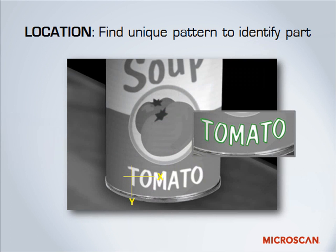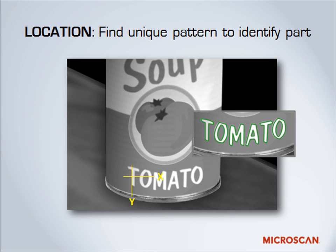Additionally, you can find a unique pattern and use that to identify a part. An example shown here is a can of soup. The vision system has been trained to look for a pattern on the soup — in this case, the portion of the label that says 'tomato' on it. We can use that pattern to verify that we do, in fact, have the right soup going down the line.